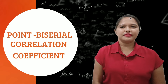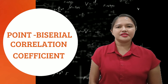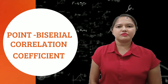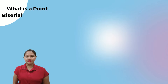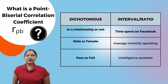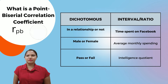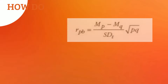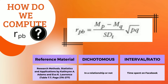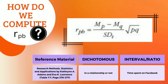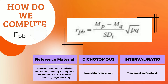What is the point-biserial correlation coefficient? It is similar to Pearson's R, symbolized as R_pb, which describes the relationship between a dichotomous variable — such as those answerable only by yes or no, naturally occurring, or arbitrarily dichotomized — and a continuous variable such as interval or ratio data, currency, or scores. To compute R_pb, we use the example of relationship status and time spent on Facebook per day, where 'in a relationship' is coded as 1 and 'not in a relationship' is coded as 2.